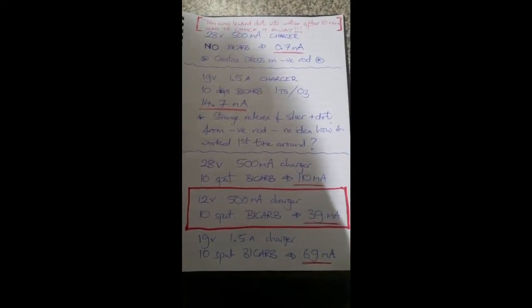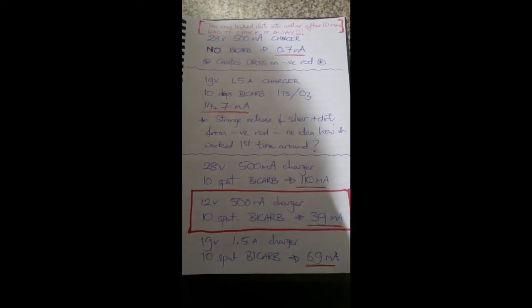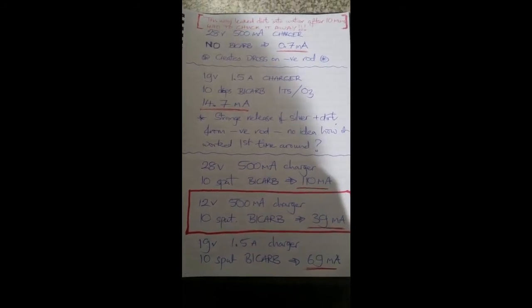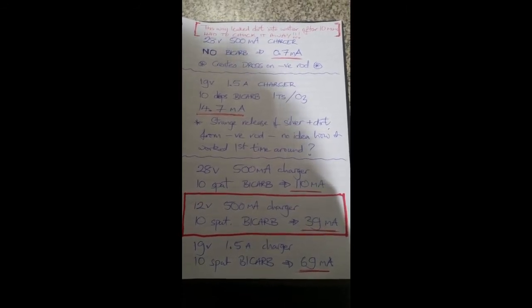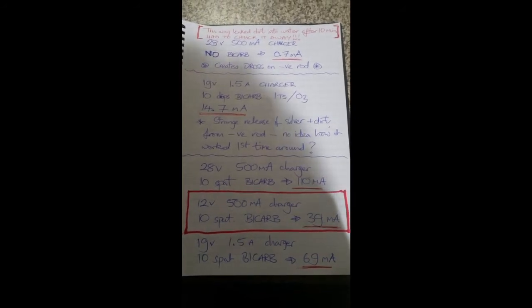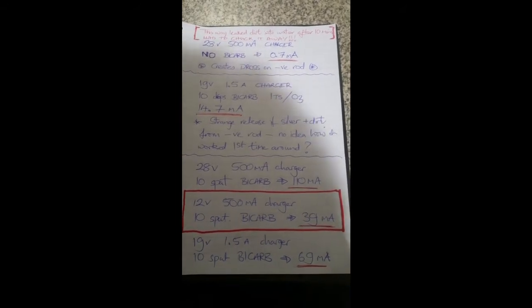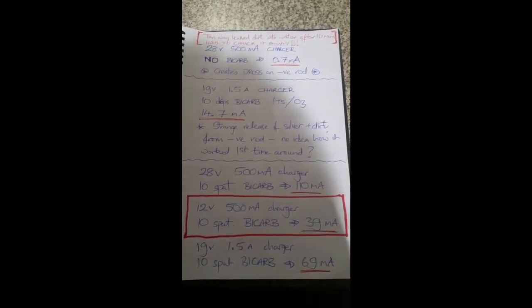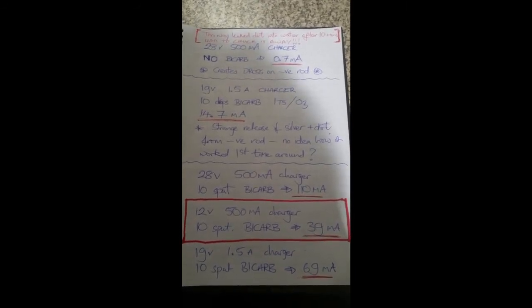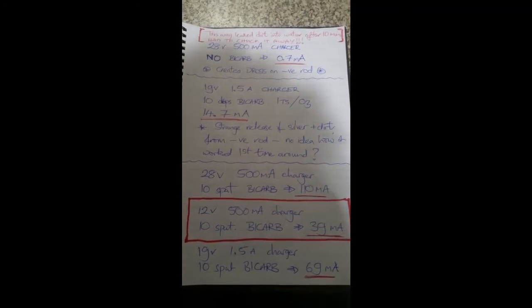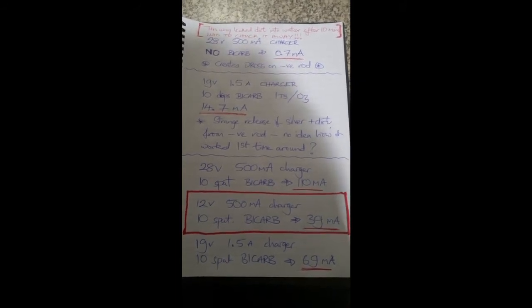This experiment went quite well the first time a few months ago. However, I tried this again and as you can see from this note I've left here, strange release of silver and dirt from the negative rod. No idea how it worked the first time around, which seems to be a recurring problem with this colloidal silver making business. We get success using a method and then try it again, and all of a sudden it doesn't work, or we get a slightly different effect or result, or even a very drastically different result.